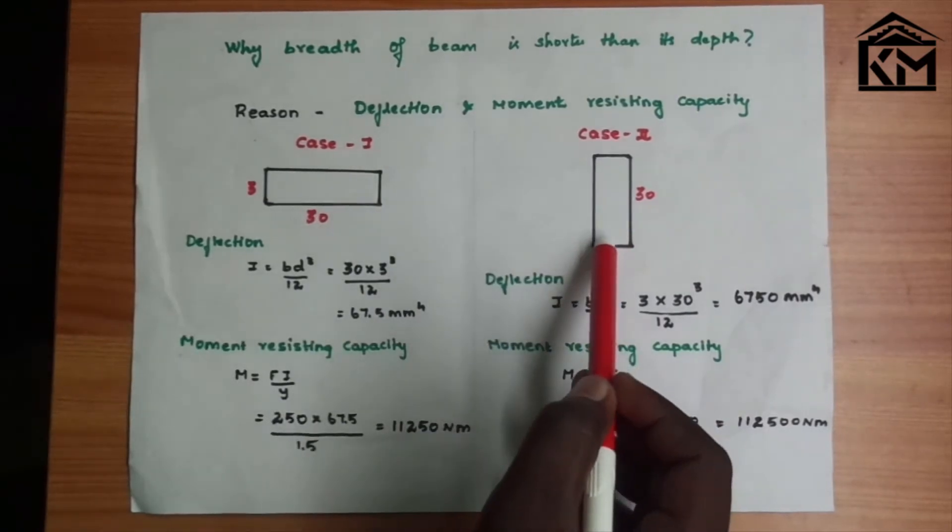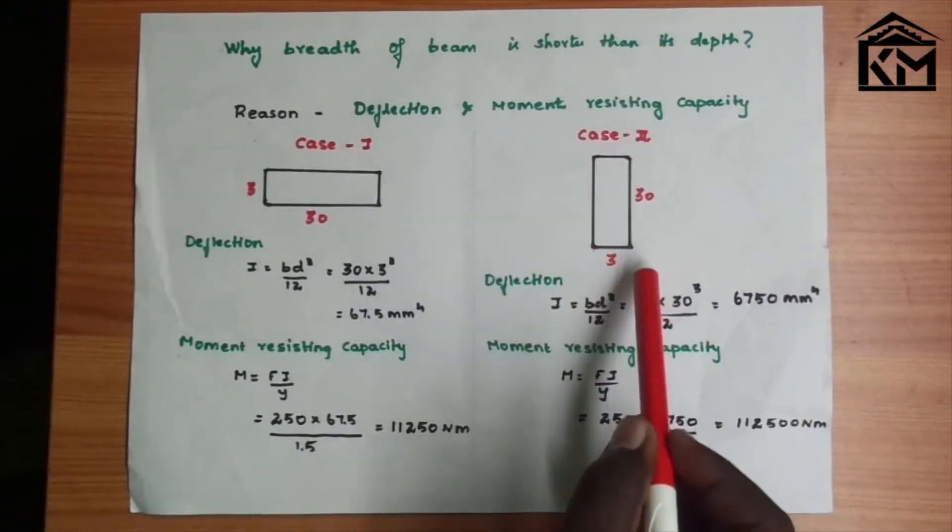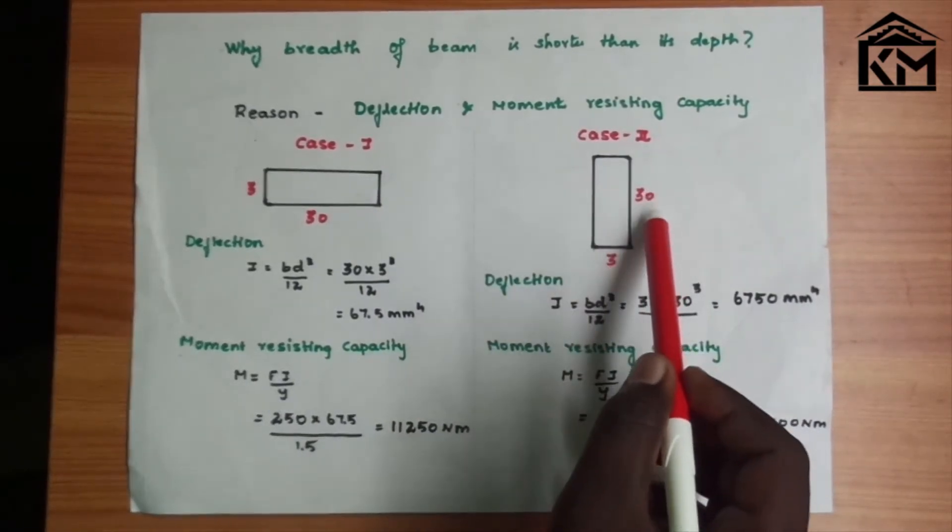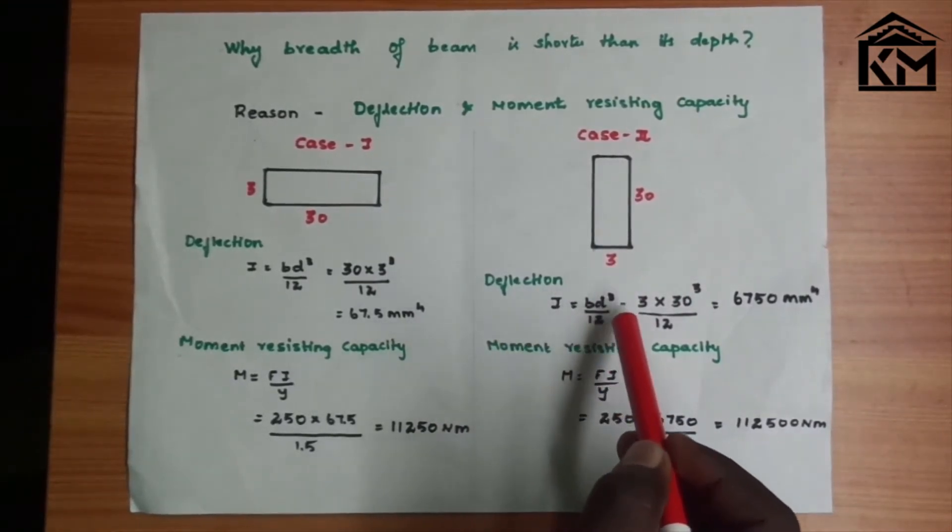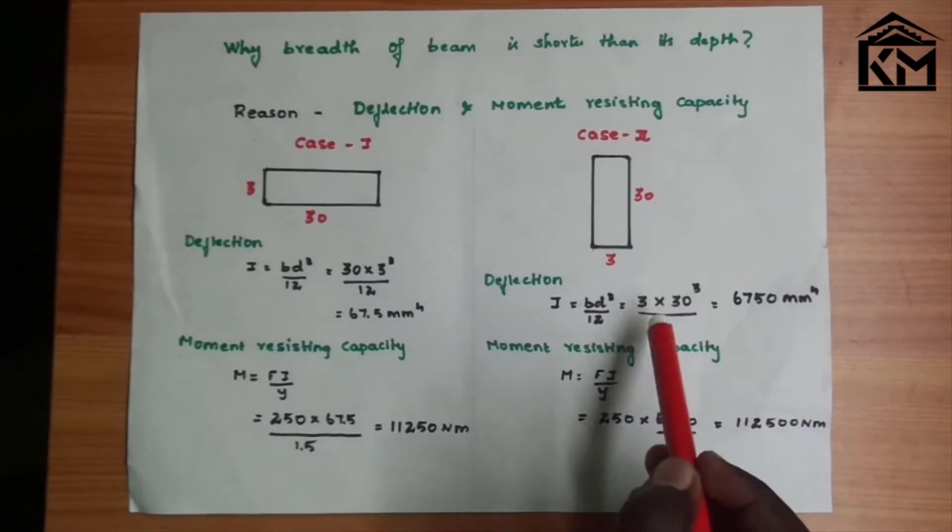So this is case 1. Now case 2, we have depth 30 and breadth 3. So now for deflection, same formula, I equal to bd cubed divided by 12.